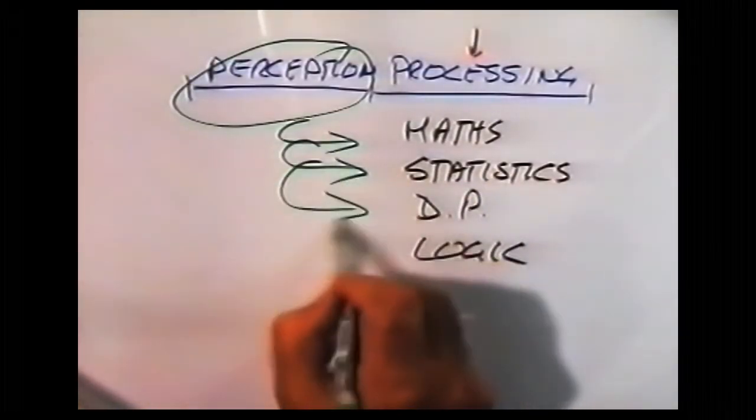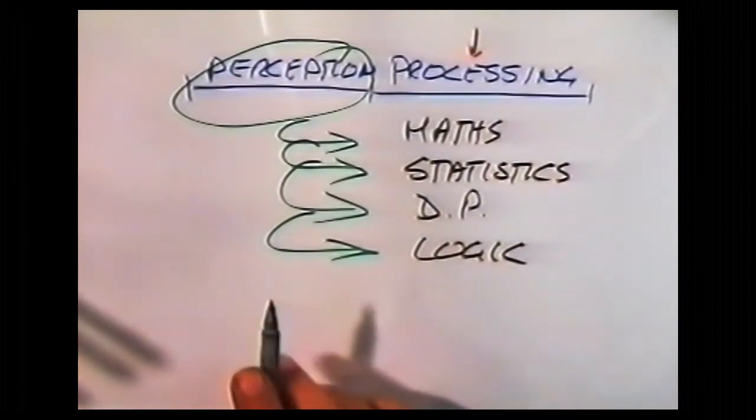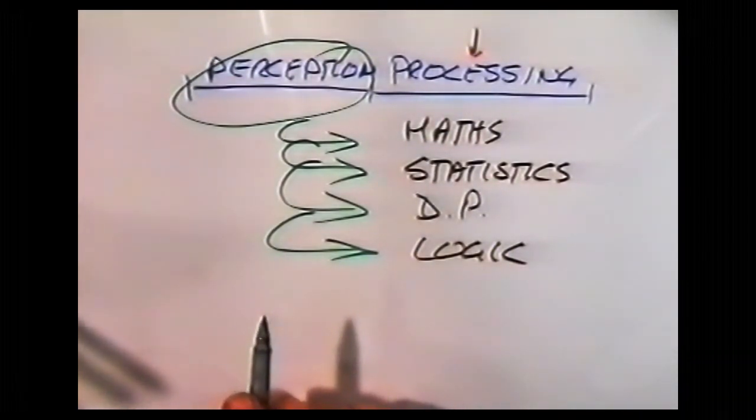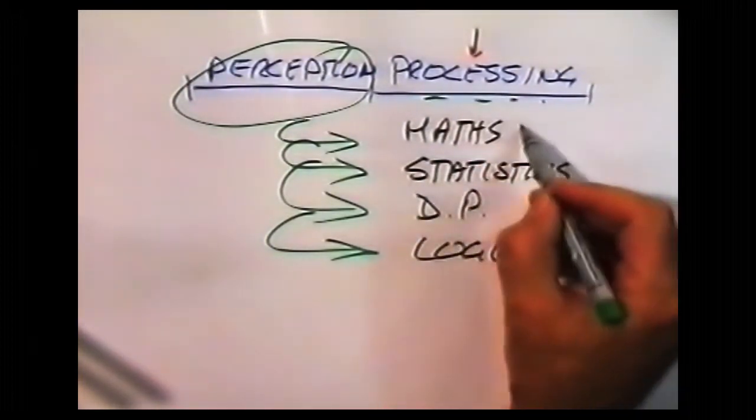But, before we can process, it is perception which provides the ingredients for processing. It is rather as if you are in the kitchen, and all the food was put on a table in a corner of the kitchen, and all you were asked to do was to cook it, to process it. And you could do that, and you would have an output.